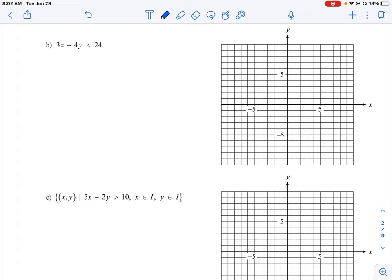So our first step here is going to be to put this into the y equals mx plus b form. So I'm going to move the 3x over. This is going to give me negative 4y is less than—I subtract 3x, bring it to the other side—and then plus 24.